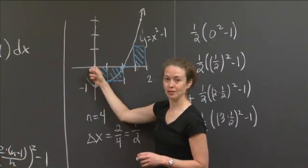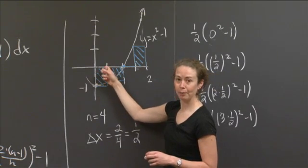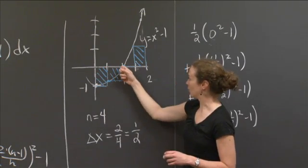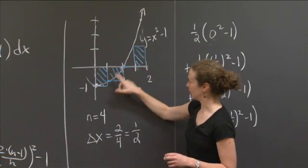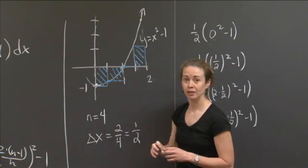My delta x was 1 half, right? So I evaluate it the first place. And then I evaluate 1 more up. And then I evaluate 1 more up. And then I evaluate 1 more up, which gives me outputs here, there, there, and there.